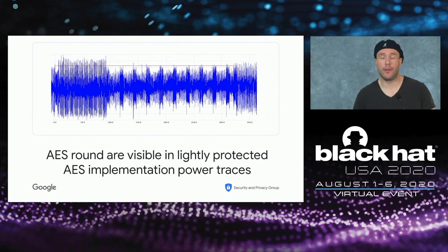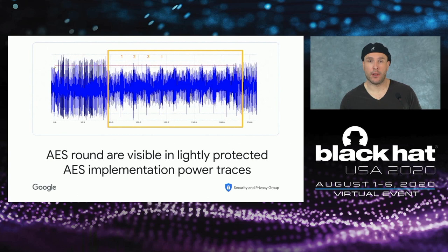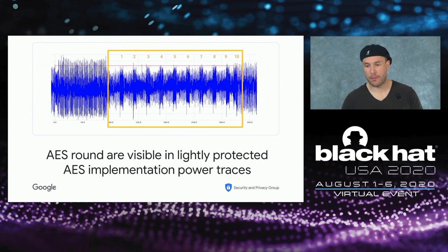Here's an example power trace captured during AES encryption. If you look closely in the middle, you'll see 10 spikes — it turns out each spike represents an AES round; there are 10 rounds for AES-128. We can see very clearly on the trace that those rounds are visible. If they're visible, they might contain information. If they contain information, we may be able to exploit it to recover the key. That is what a side-channel attack is.